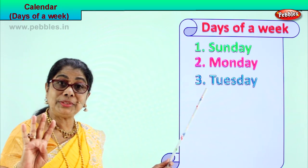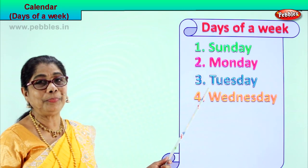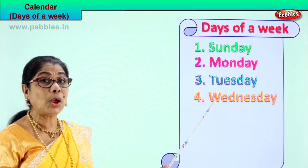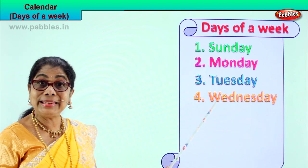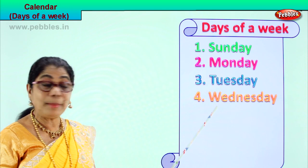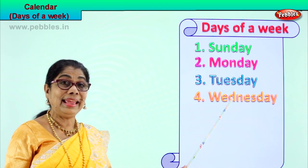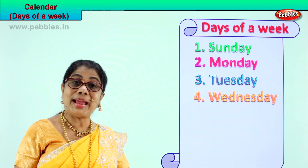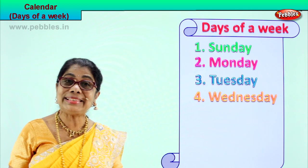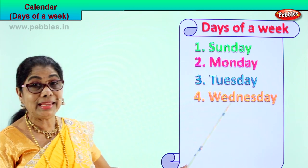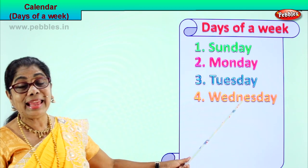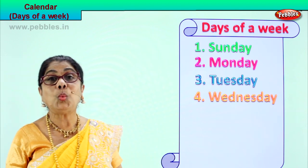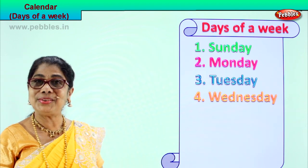Which is the fourth day of the week? The fourth day of the week is Wednesday. W-E-D-N-E-S-D-A-Y. Wednesday.